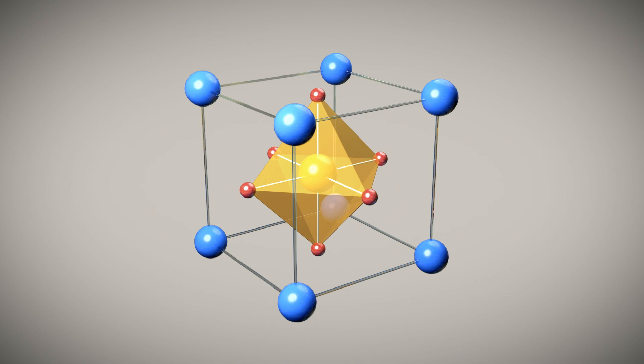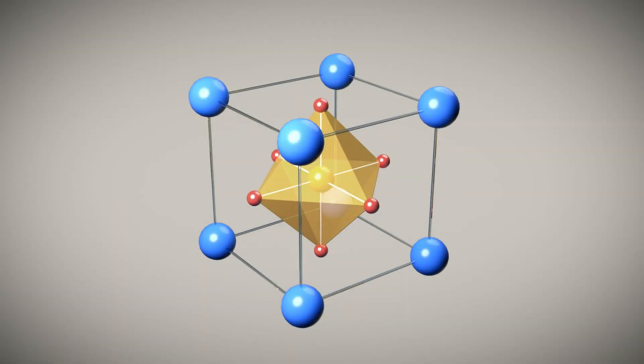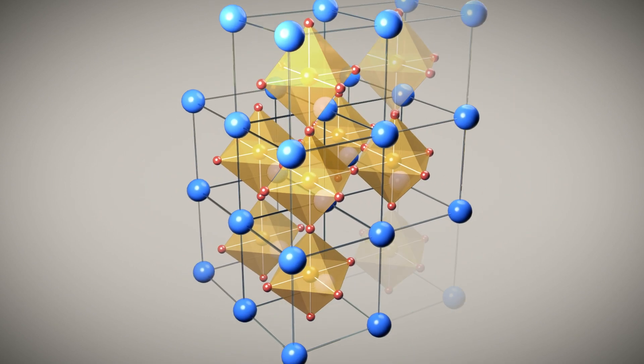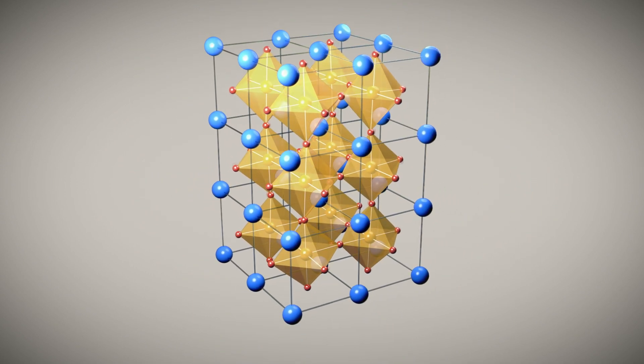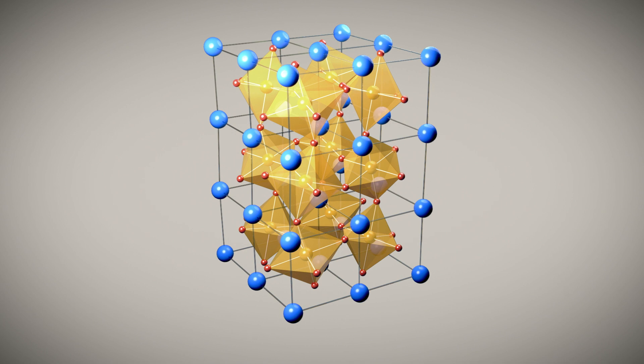Most perovskites don't have this cubic structure in their ground states, however, including the mineral perovskite, because most perovskites undergo so-called octahedral rotation distortions, in which the BO6 octahedra rotate about one or more of the crystallographic axes.